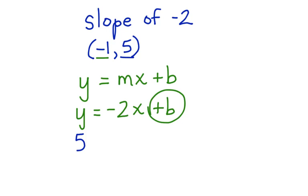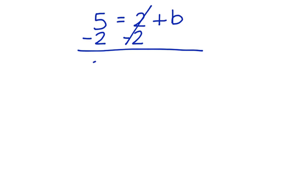So we have 5 equals negative 2 times negative 1 plus b. 5 equals negative 2 times negative 1 is a positive 2 plus b. Let's move that here. 5 equals 2 plus b. We want to get b alone. We subtract 2 from both sides. These cancel, and we end up with 3 is equal to b.